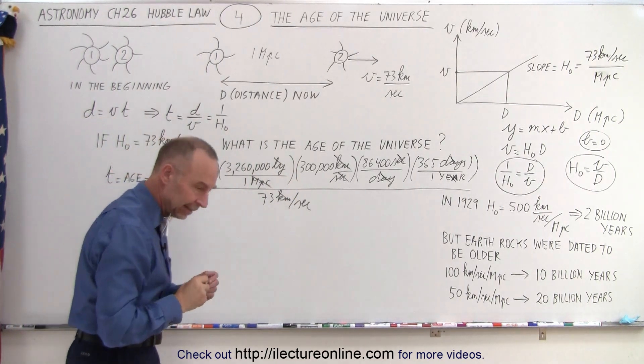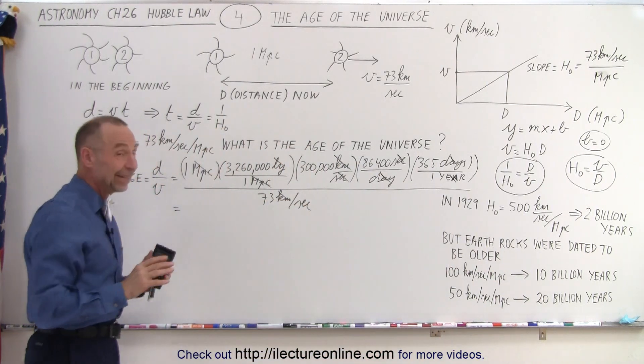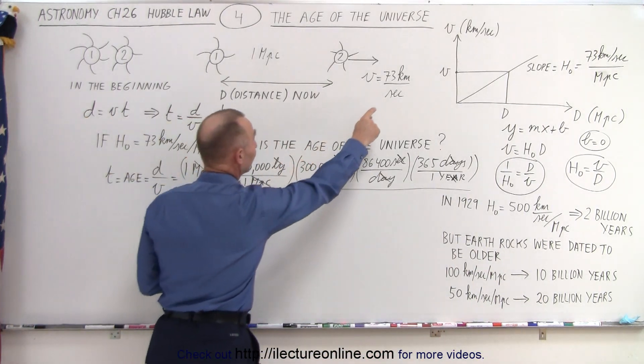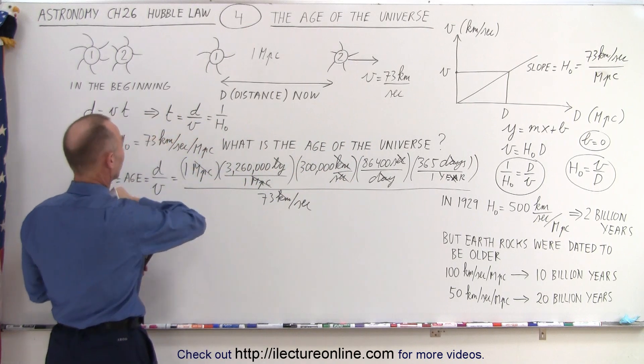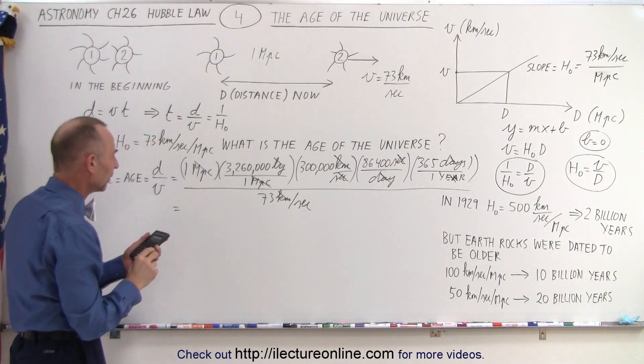All right, so let's grab a calculator and figure out how old the universe is, at least based upon the premise that the Hubble constant is equal to 73 kilometers per second per megaparsec.